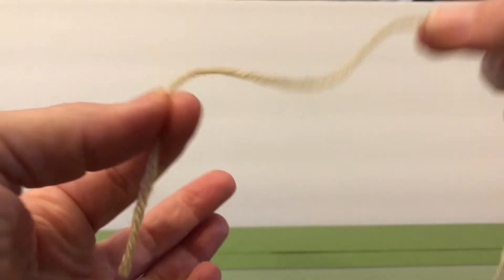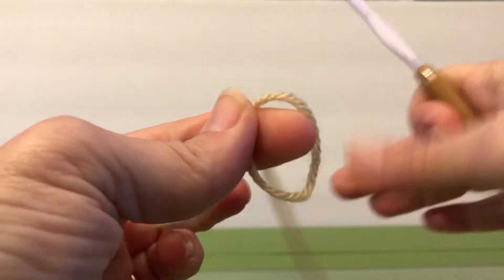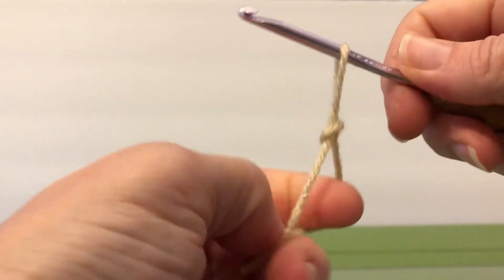Your tail is to your left, your working yarn is to your right. You're going to loop the working yarn over your tail and drop it behind. Grab it through the loop, pull it through.